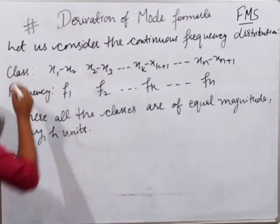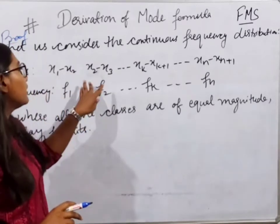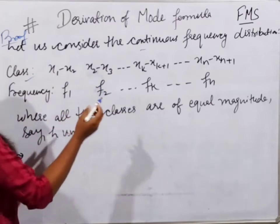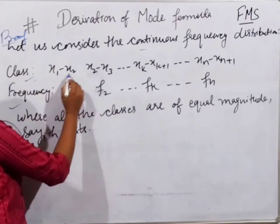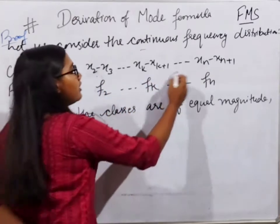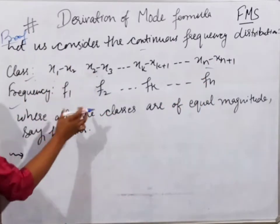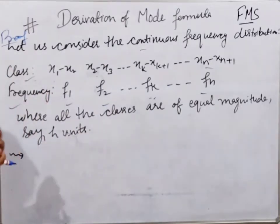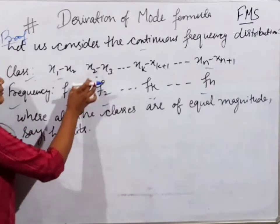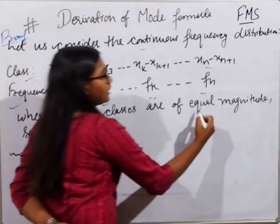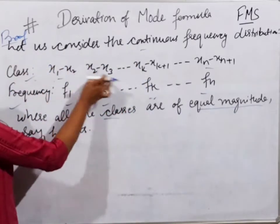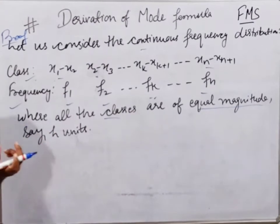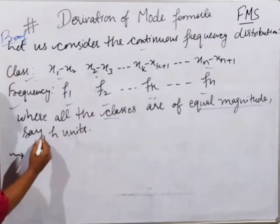At the start of the proof, we consider some theoretical setup. For continuous frequency distributions, we take class intervals and their frequencies. The class intervals are x1 to x2, x2 to x3, up to xk to xk+1, and so on up to xn to xn+1. Their respective frequencies are f1, f2, up to fk, and fn. All classes are of equal magnitude, meaning the difference x2 - x1 is a constant, which we call h.